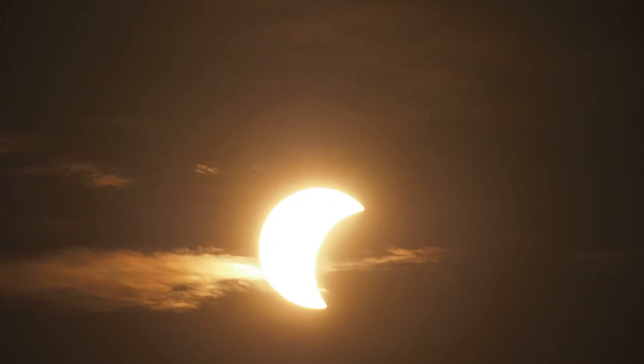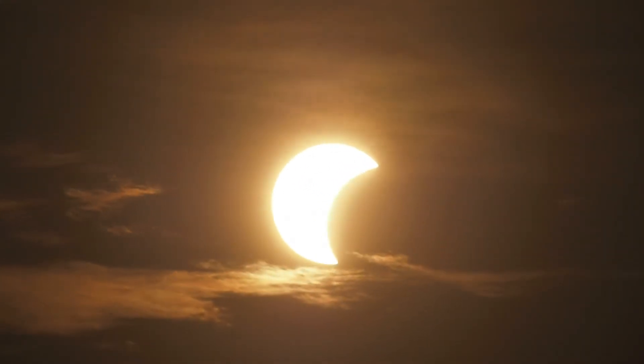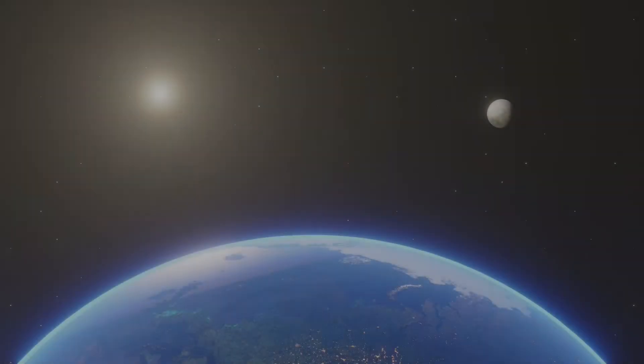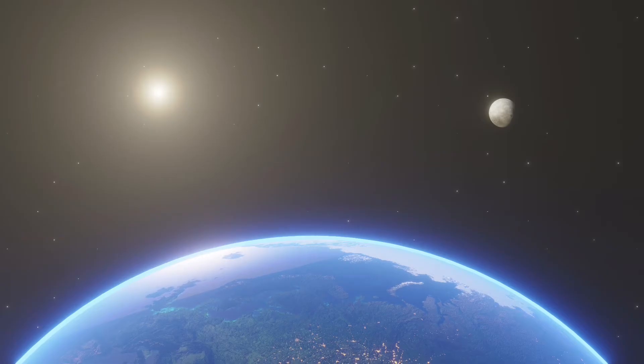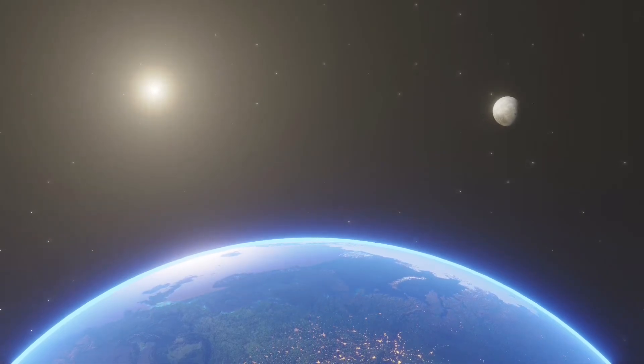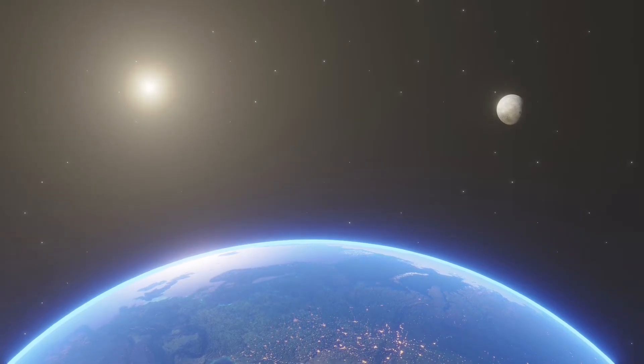There is, however, one incredibly strange coincidence that comes into play during a solar eclipse. It happens to work out that the Sun is about 400 times larger than the Moon, but it also happens to be about 400 times further away from us than the Moon.